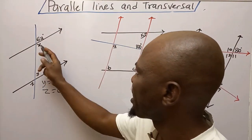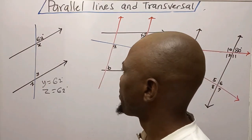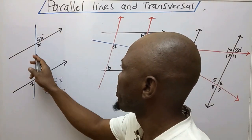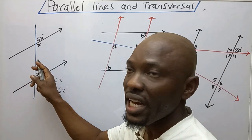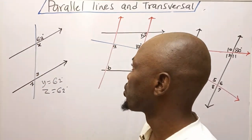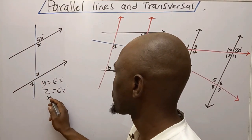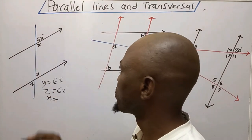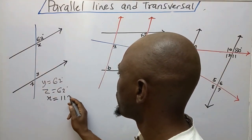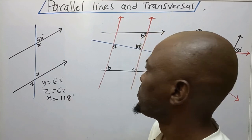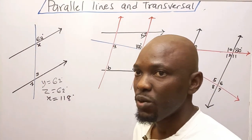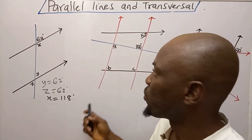Now I want to get X. There are two ways I can get X. Number one, I'll consider this as a straight line — I have two angles on this straight line, so the sum of angles on a straight line equals 180 degrees. So X will be 180 minus 62 degrees, which gives me 118 degrees. The reason is sum of angles on a straight line.